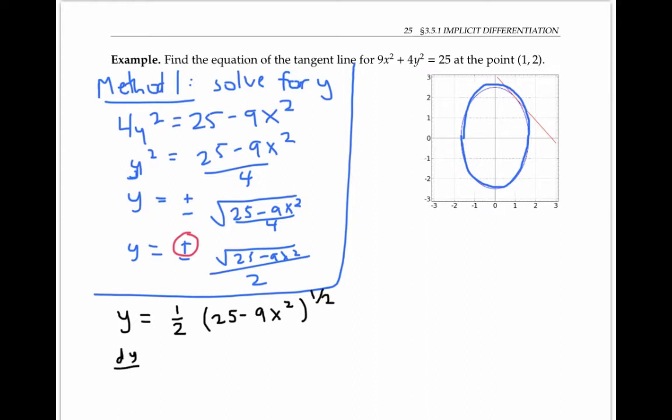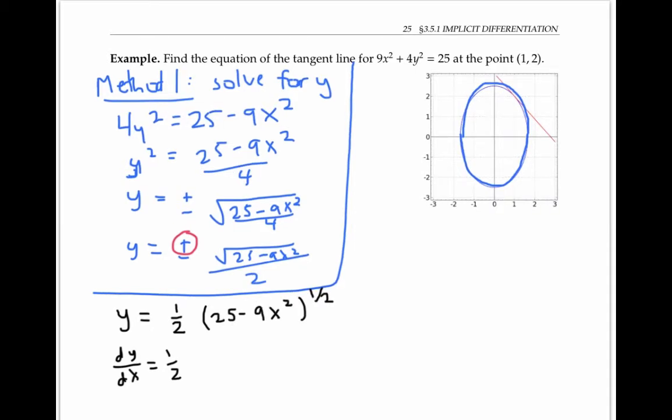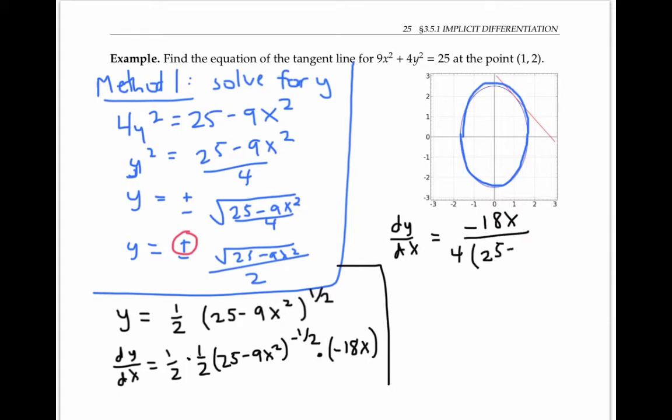So now if I want to take dy/dx, I can pull out the constant of 1/2. And now I'll start using the chain rule, where my outer function is taking things to the 1/2 power and my inner function is this 25 - 9x². So I'll take the derivative of my outer function by bringing the 1/2 down, taking the inner function to the -1/2. Now I multiply by the derivative of the inner function, which is -18x. If I simplify a little bit, I get dy/dx is -18x over 4 times (25 - 9x²) to the 1/2 power, or in other words, dy/dx is -9x over 2 times the square root of (25 - 9x²).